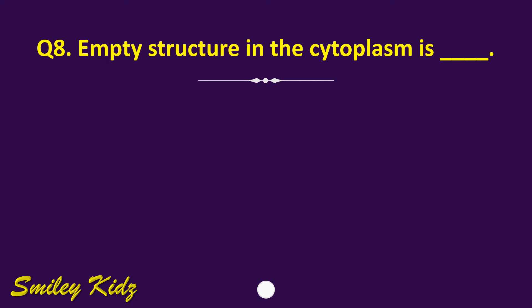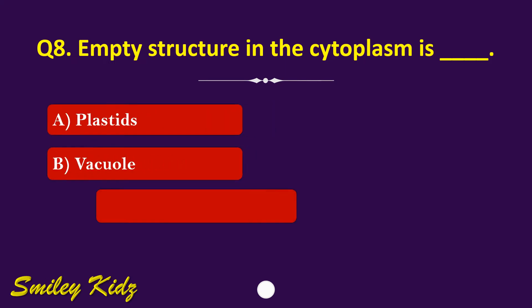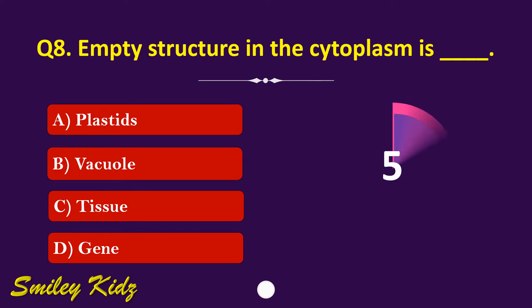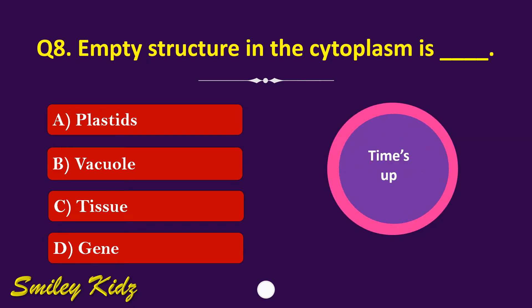Question number 8. Empty structure in the cytoplasm is dash. The options are: A. Plastids, B. Vacuole, C. Tissue, or D. Gene. Your time starts now. Your time is up and the right answer is option B. Vacuole. Empty structure in the cytoplasm is vacuole.